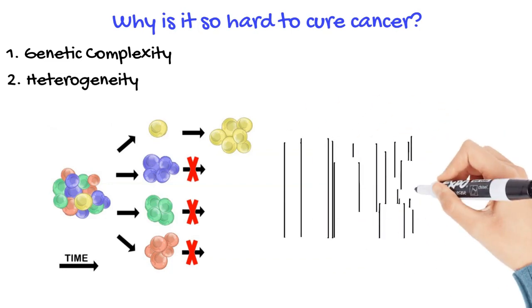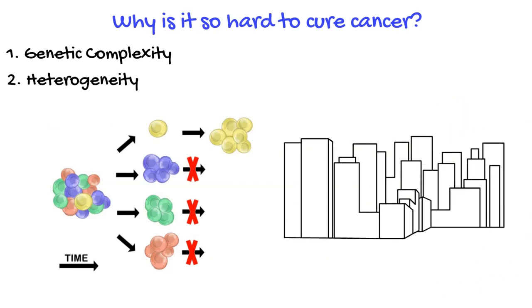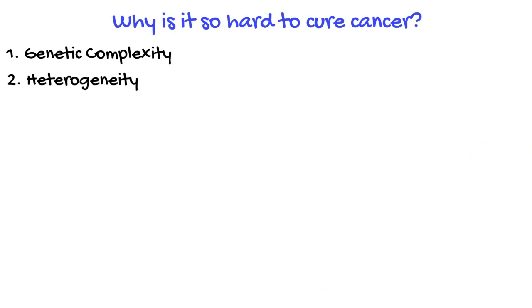Think of a tumor as a bustling city with diverse neighborhoods. Each neighborhood represents a different subtype of cancer cells. Treating cancer is like trying to develop a single solution that works for every neighborhood, considering their unique characteristics and needs.